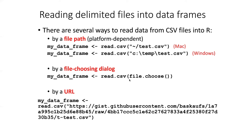In that case, it's easier and better to include inside the read.csv function another function called file.choose. file.choose will open a file selection dialog and let the user locate the CSV file before R tries to open it. This makes the script much more portable for any user; however, if you're running the script many times it becomes annoying to have to go through the file selection dialog every time.